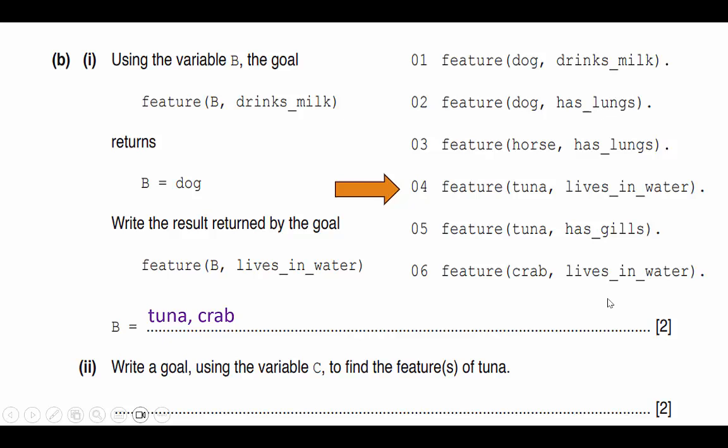Now they want us to find the features of tuna, and they want us to use variable capital C, and it must be capital because it is a variable. That's how you represent variables in the declarative programming language. So I look for tuna. I see tuna lives in water. Tuna has gills. So I need to represent that.